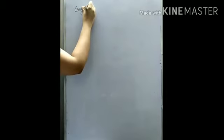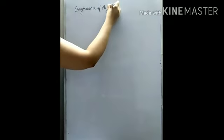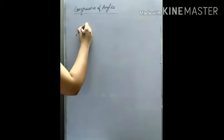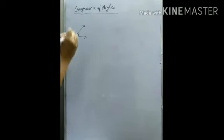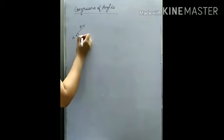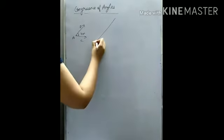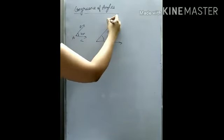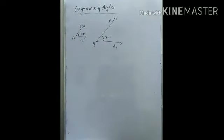We have covered congruent plane figures, then congruent line segments, and now I will talk about congruency of angles. Angles meet at one point. If I say angle ABC is 40 degrees and similarly angle PQR is also 40 degrees, that means they are exact copies. The measurement of the two angles is the same.